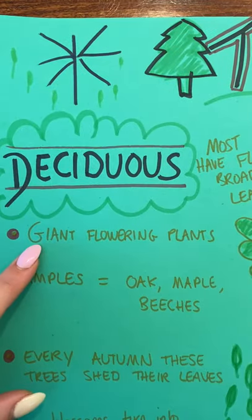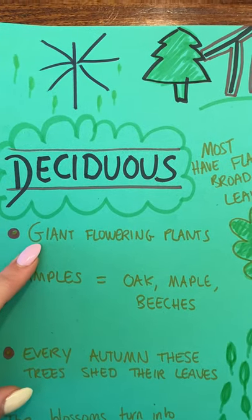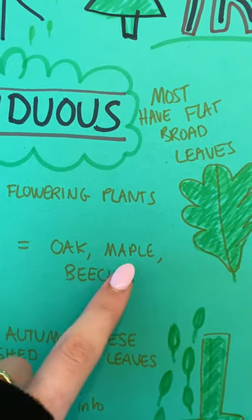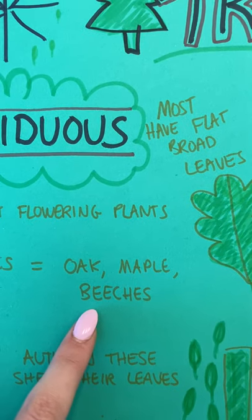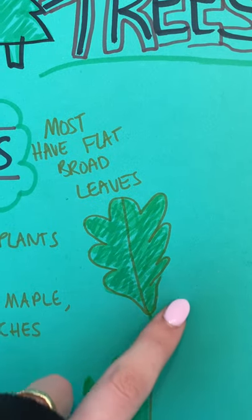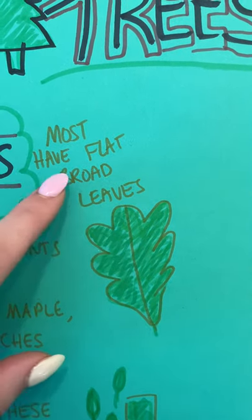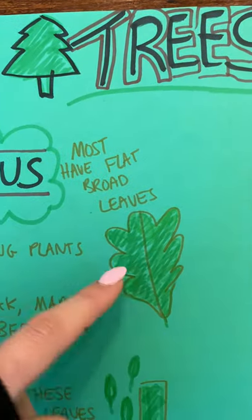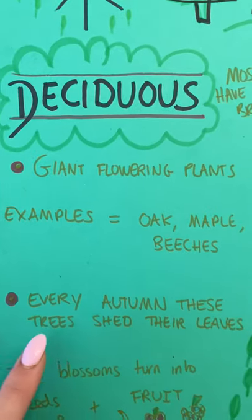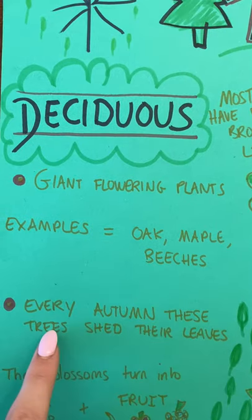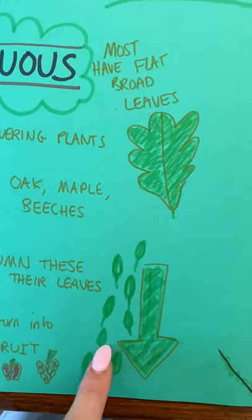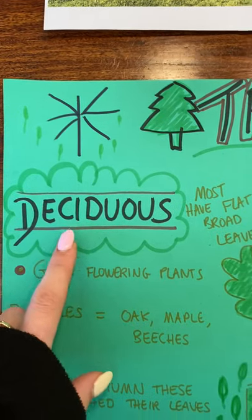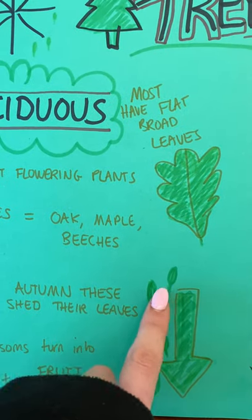Now these trees have giant flowering plants and examples are oak, maple and beeches. Most have broad, flat leaves, like this. They are broad, which is wide and flat, like this. And every autumn, these trees shed their leaves. So deciduous trees lose their leaves in autumn.